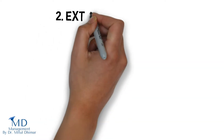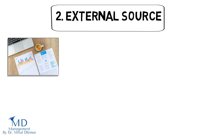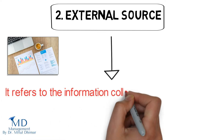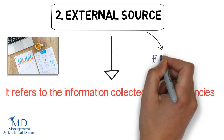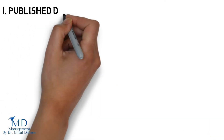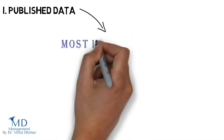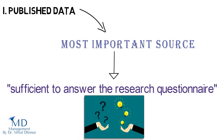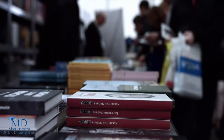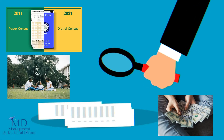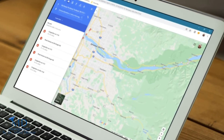The second type of secondary data is collected from external sources. It refers to information collected from outside agencies. There are four types of external data sources. 1. Published data: They are the most important source and are sometimes sufficient to answer the research questionnaire. For example, a person starting a new specialty shop will use census data on family characteristics and income to support a likely location for the shop.